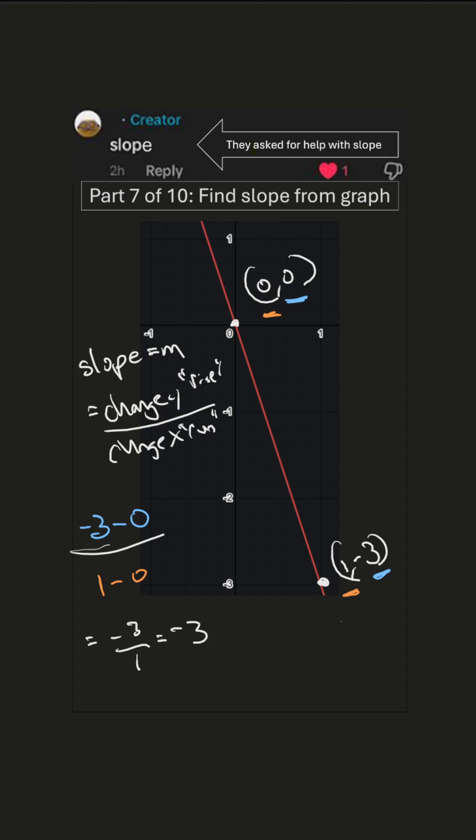Now there's an easier way to do this when the graph is this clear. What you do is just you go over one unit, you do one unit of run, so we go from 0 to 1.